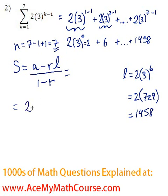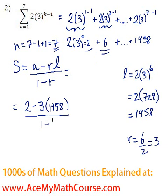So A, the first term is 2 minus R. What is R? The common ratio will be just 3. How did I find that out? Well, you can just take one term and divide it by the previous. So 6 over 2 is 3. So 3 times the last term which is 1458, all over 1 minus 3.